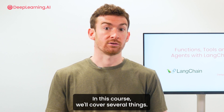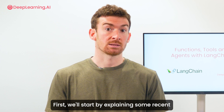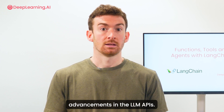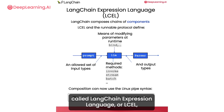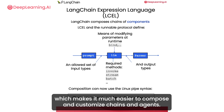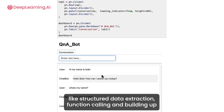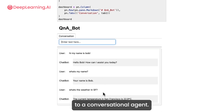In this course, we'll cover several things. First, we'll start by explaining some recent advancements in LLM APIs. Next, we'll go over a new syntax that we at Langchain have introduced called Langchain Expression Language, or LCEL, which makes it much easier to compose and customize chains and agents. We will then take those two components and go over popular use cases like structured data extraction, function calling, and building up to a conversational agent.